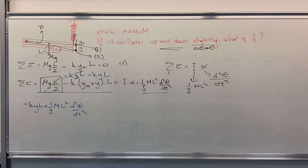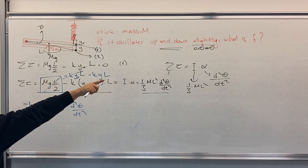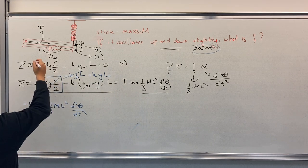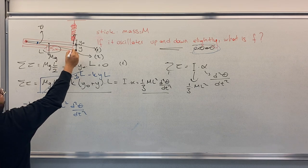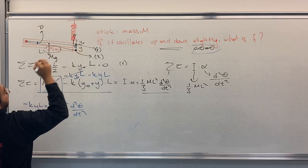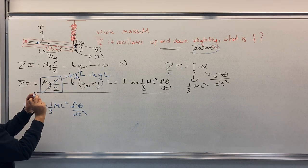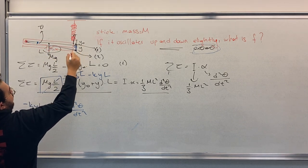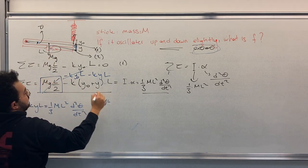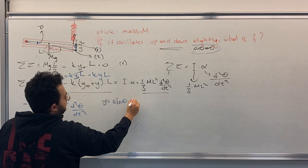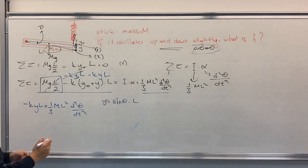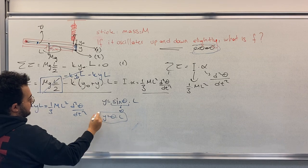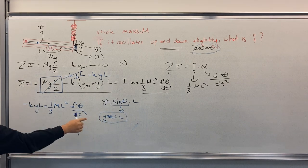Now, since the oscillation is up and down slightly, we have this approximation. Since this angle is theta and we have 90 degrees here, all these are approximations because of the small movements. We know that this is L. We can say that Y equals to L times sin theta times L, and we will use this approximation.